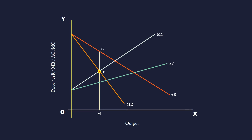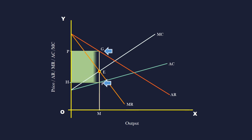Equilibrium price is P. Average cost is MF, and average revenue is MG. Since average revenue is greater than average cost, the firm is making abnormal profit represented by the area PGFH.